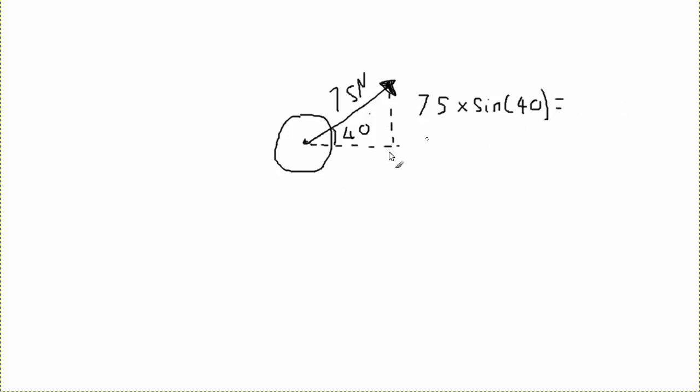And for our horizontal, this is our vertical, this is our horizontal, just had a brain fart there. I'm going to do 75 multiply by the cosine of 40. So now, I'm going to give you about five seconds to calculate them. You can pause the video if you like. For this here, 75 multiplied by the sine of 40 is about 48.2 newtons. And then our horizontal will be around 57.5 newtons.